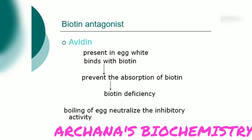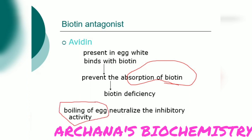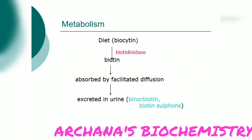Now, what is the biotin antagonist? Avidin, present in egg white, will bind to biotin and prevent its absorption, leading to deficiency. You are supposed to boil the egg, which will neutralize the inhibitory activity. Biotin and avidin will be strongly bound and will not be digested by pancreatic enzymes. Prolonged exposure to avidin will lead to biotin deficiency. The key point: you must boil the egg before eating.